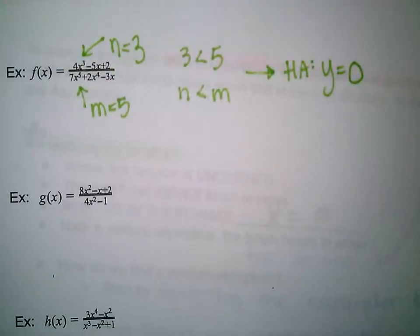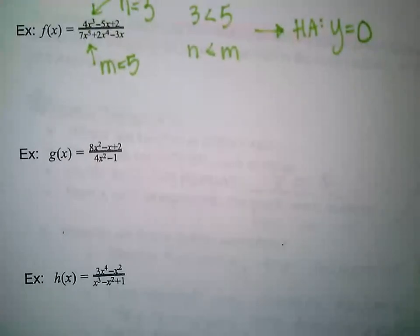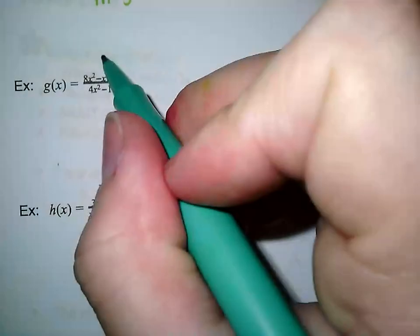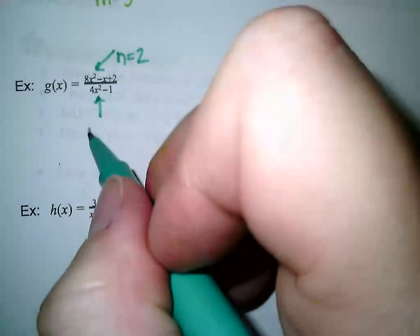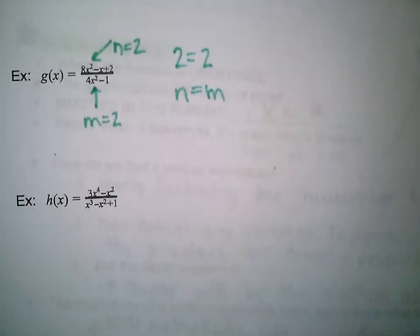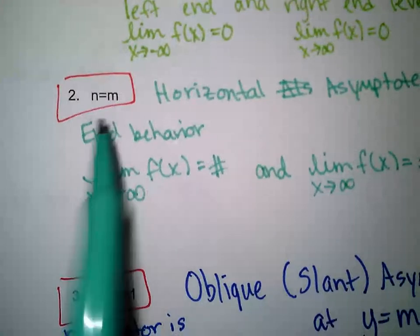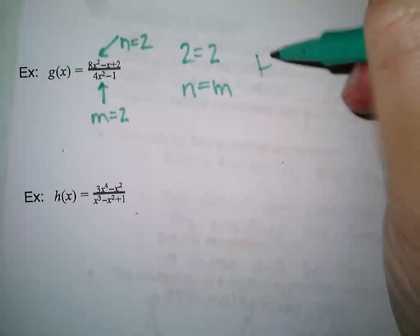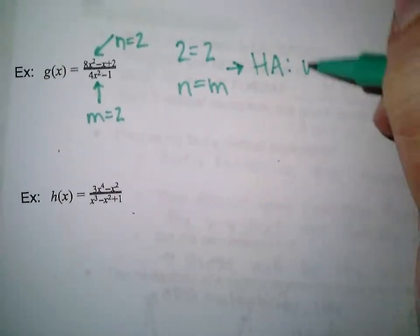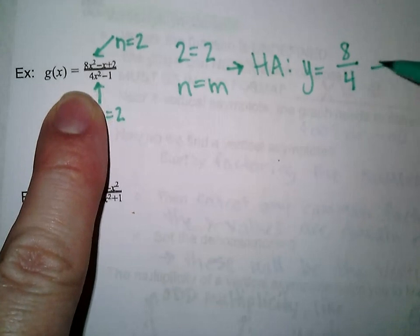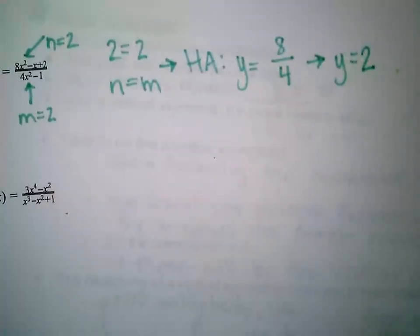Next example: the degree of the numerator is 2 and the degree of the denominator is 2 as well, so n equals 2 and m equals 2. Since 2 equals 2, we're in the case where n equals m. When n equals m, we have a horizontal asymptote at y equals the leading coefficient of the numerator over the leading coefficient of the denominator — that's 8 over 4, which gives y equals 2.